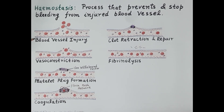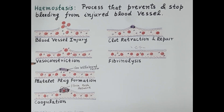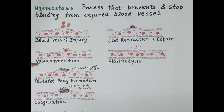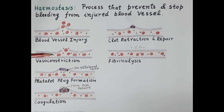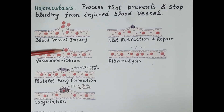If the wall of a blood vessel is injured, blood escapes into the surrounding tissue. The first step of hemostasis is vasoconstriction — as soon as the blood vessel wall is injured, there is vasoconstriction of the injured blood vessel. Because of vasoconstriction, there is narrowing of the lumen of the blood vessel, and therefore vasoconstriction reduces blood loss.